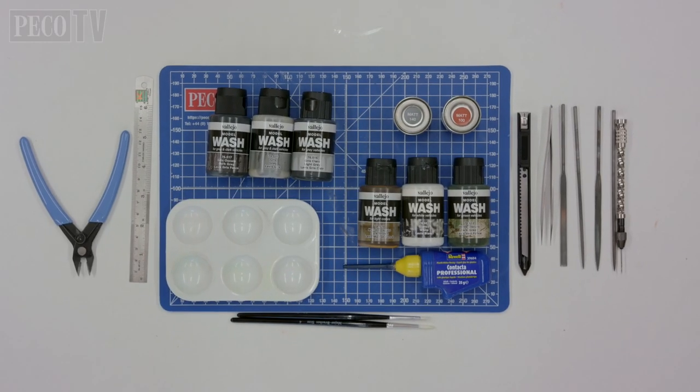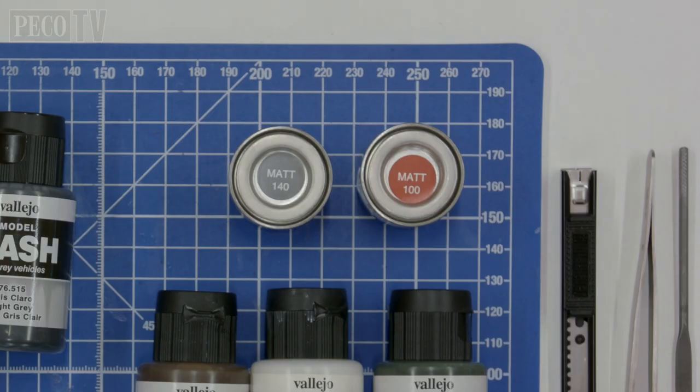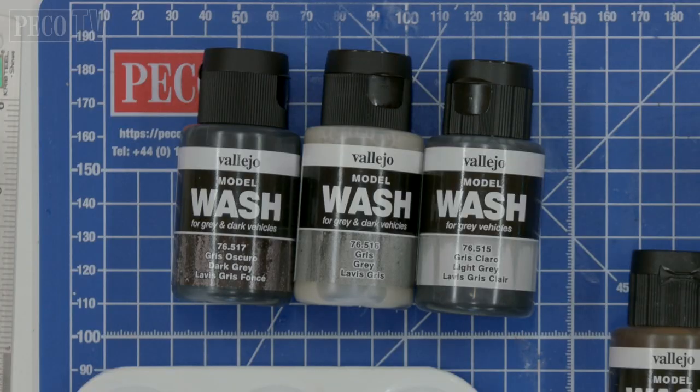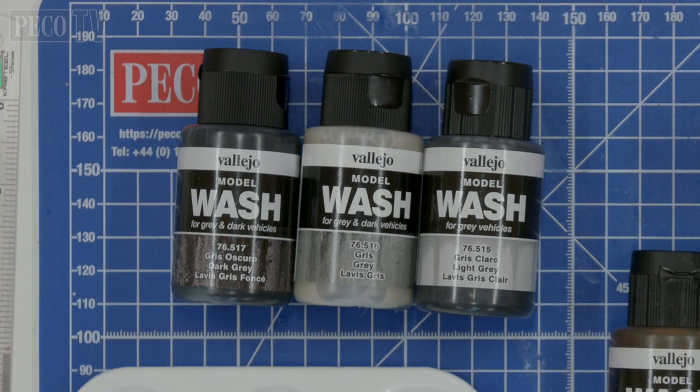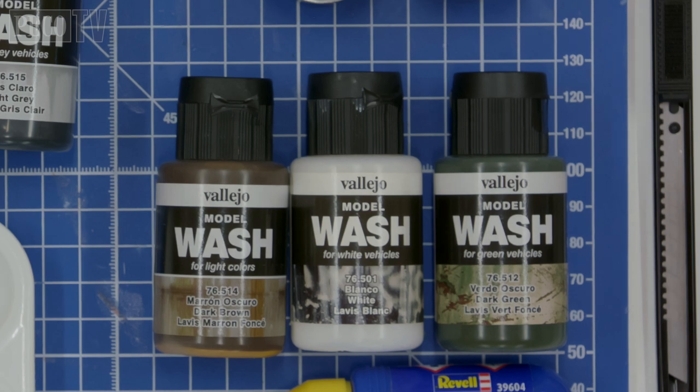Again for this plastic kit build we will use liquid polyurethane cement, two Humbrol enamel paints and a selection of acrylic washes from light to dark grey, dark green, brown and white.